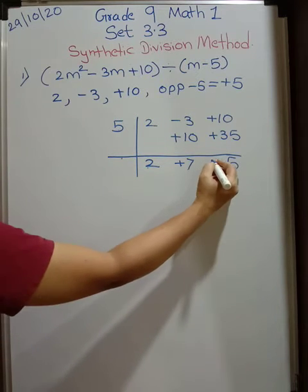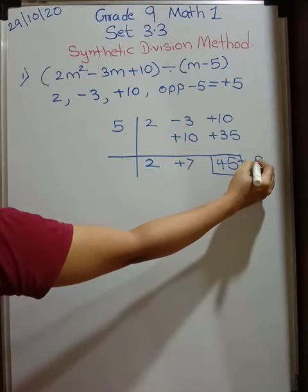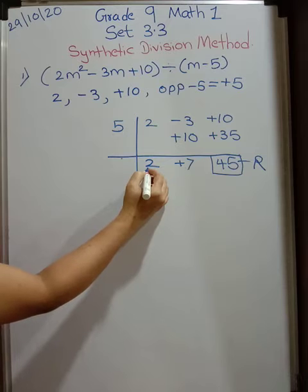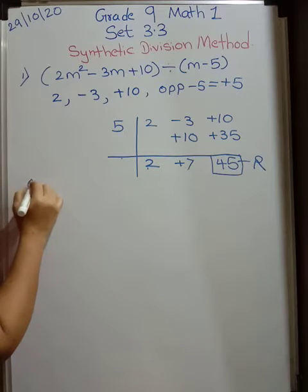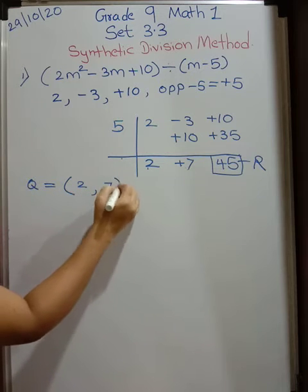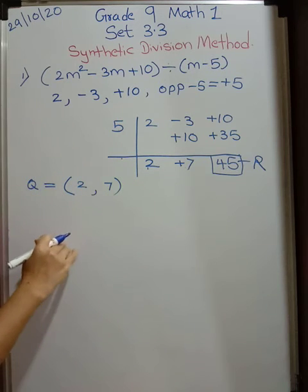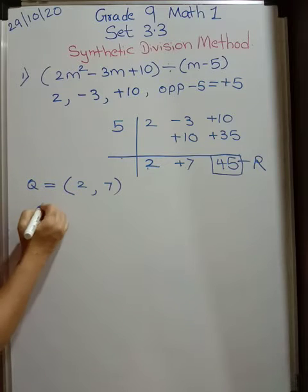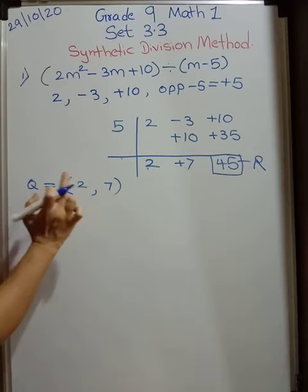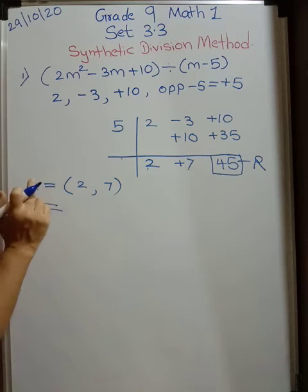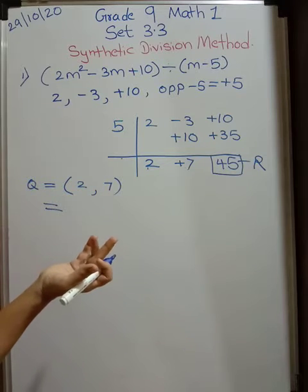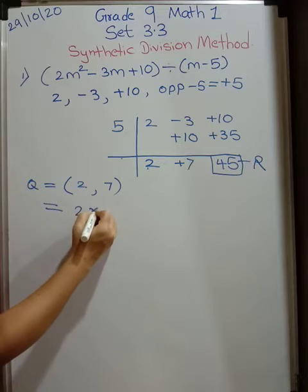Last number what you get is always your remainder. And this is quotient in coefficient form. So what will be your quotient in coefficient form? 2, 7. So if I want to write it in index form, what it will be? 1 and 2. 2 numbers are there. So index of or degree of the variable will be 1. How many numbers are there? From that you subtract 1. So here it will be only 2x.